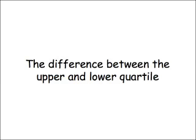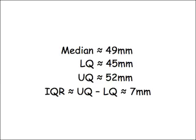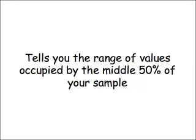The interquartile range is simply the upper quartile minus the lower quartile, and it tells you how wide your frequency distribution would be if you plotted a histogram or bar chart. Recapping our values: the median is 49mm, the lower quartile is 45, the upper quartile is 52, so the interquartile range is 52 minus 45, or 7mm. The interquartile range tells you how the middle 50% of your distribution is spread out — half the cress seedlings lie in the range 45 up to 52mm in height.